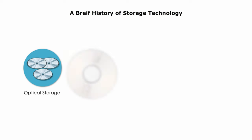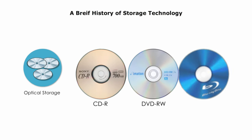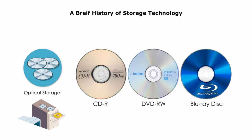DVDs, or digital versatile disks, were introduced in the 1990s. They were disks that could store data using lasers, like CD-ROMs, but with more capacity. A single-layer DVD could store up to 4.7 gigabytes of data, and a dual-layer DVD could store up to 8.25 GB of data. They were ideal for movies and large software programs.